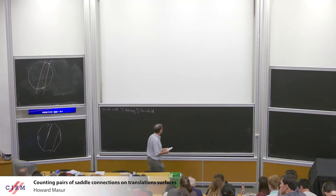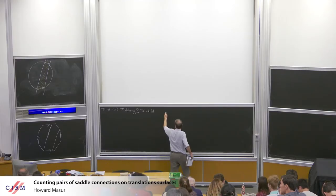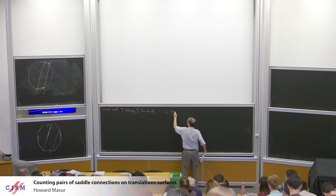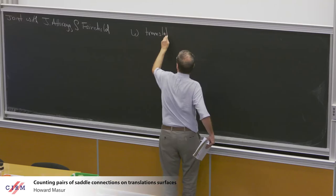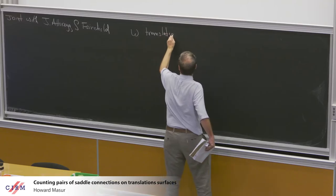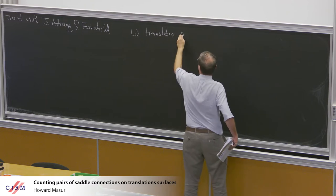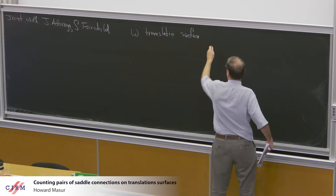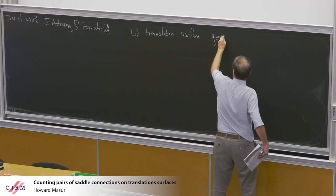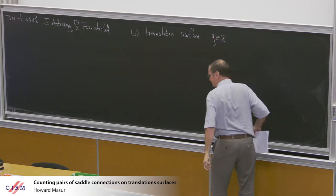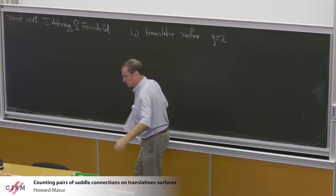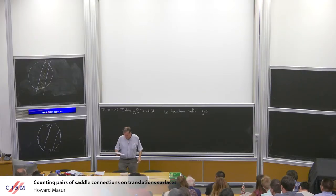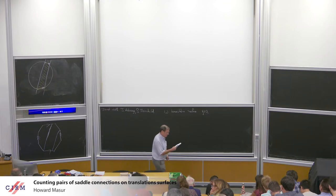Omega is going to be a translation surface. Translation surface on a closed surface of genus G, the usual, and it'll lie in some stratum.